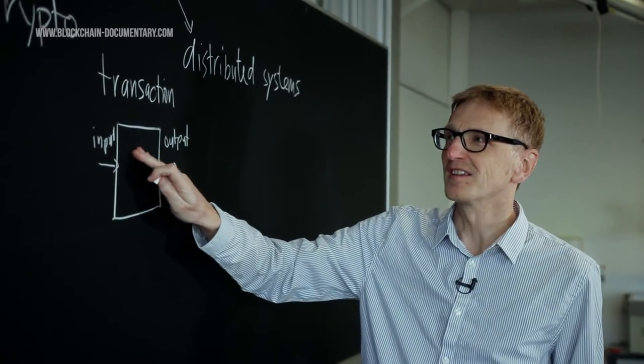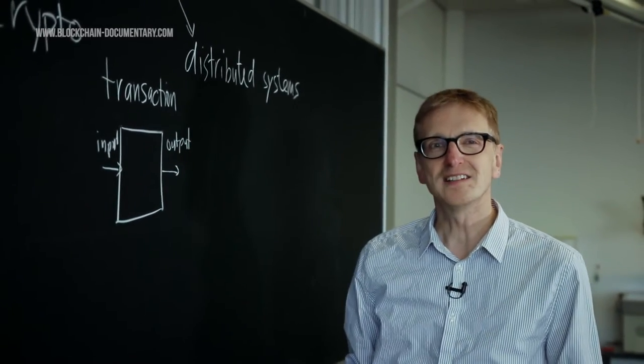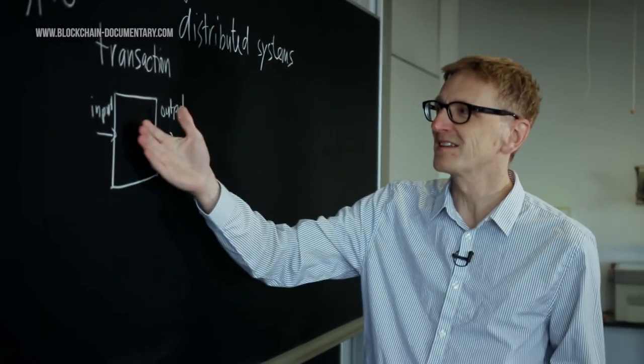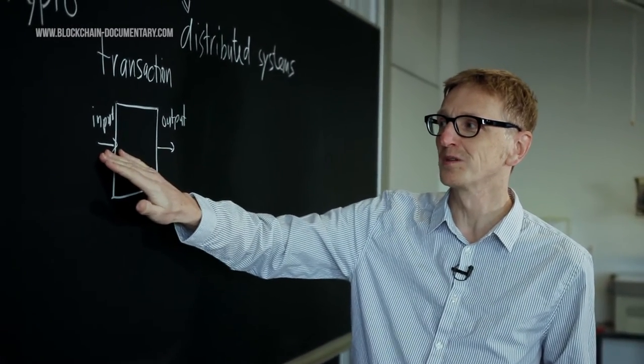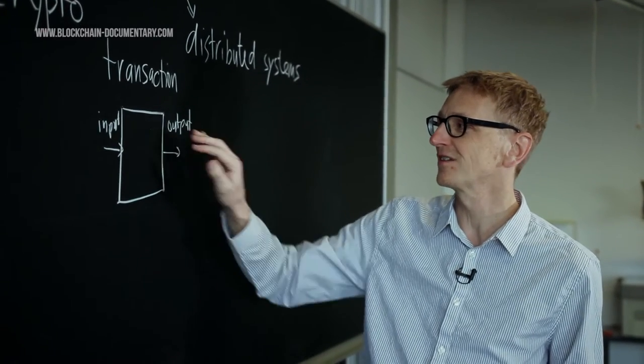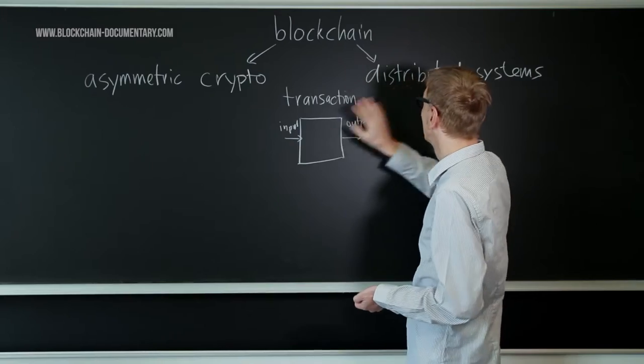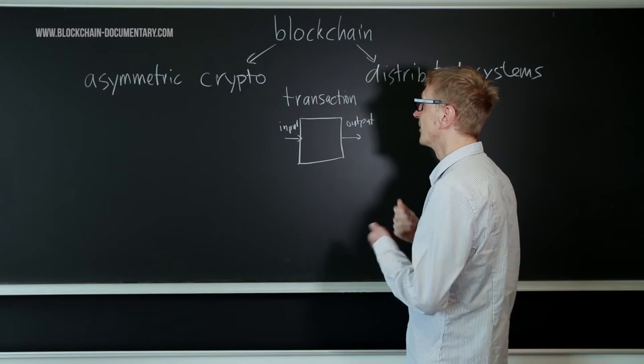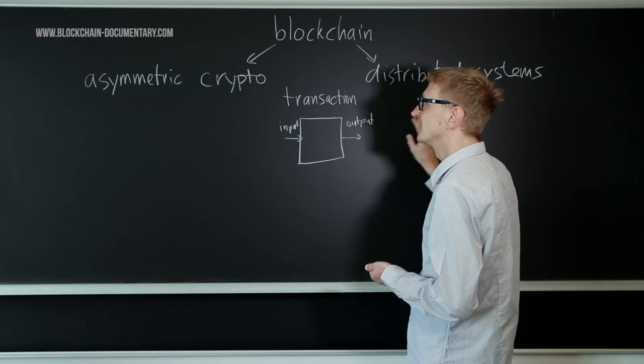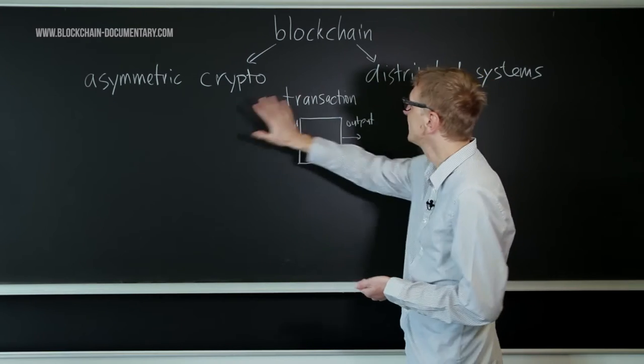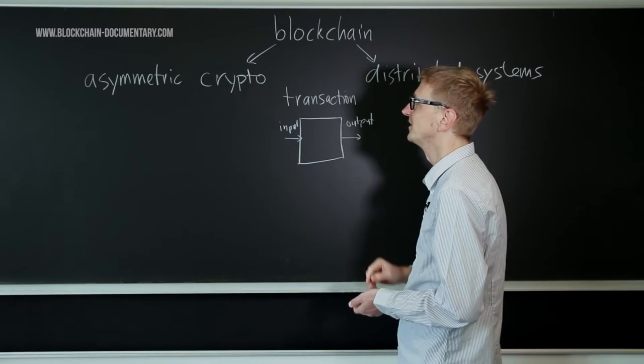These transactions have to be signed, so it has to be clear that somebody wanted to do this transaction. The person who owns the funds on the input side wants to do this transaction to send money to the output side to buy something. And the transactions have to be ordered. One has to say which transactions actually happened and in what order did they happen. And these two ingredients basically help us to do these two things.